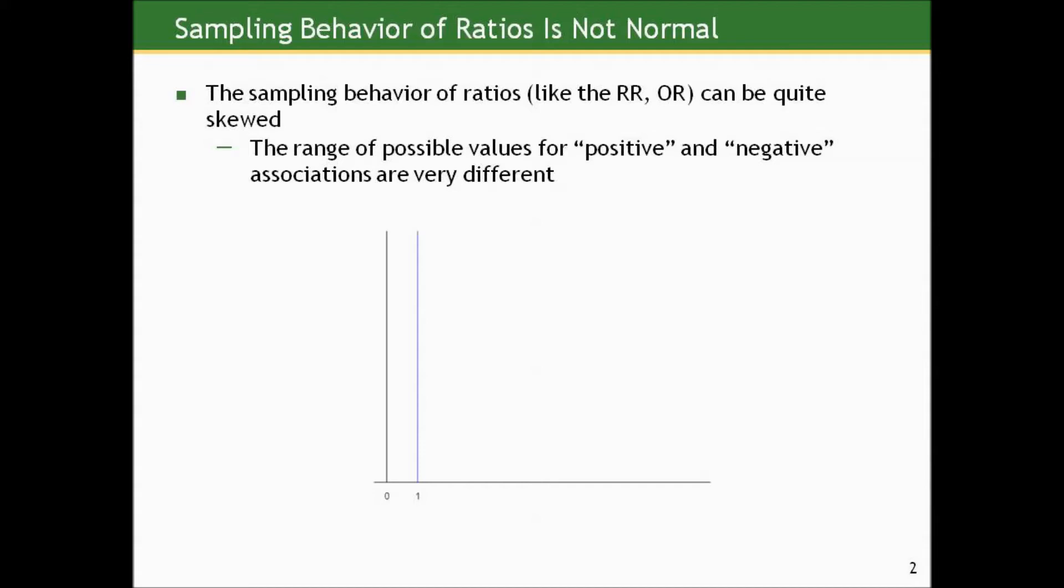You might say, well why is that? Everything else we looked at was nice and well behaved. Well it turns out if you think about it, the range of possible values for in quotes negative and positive associations are very different. For the group on top to the group on the bottom, if the group on top has lesser risk than the group on the bottom, it results in a relative risk estimate somewhere between 0 and 1, and the range of possibilities for that scenario is between 0 and 1.